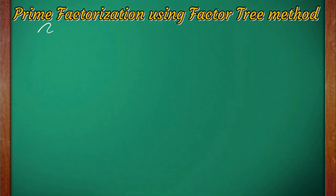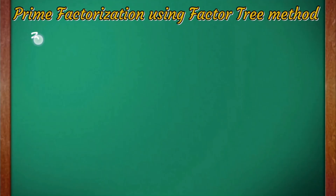In the factor tree method, we are going to find the prime factors by using a factor tree. A factor tree is a diagram which is used to break down a number by dividing it by its factors until all the numbers left at the end are prime numbers.